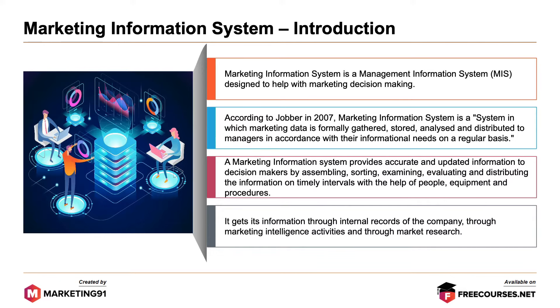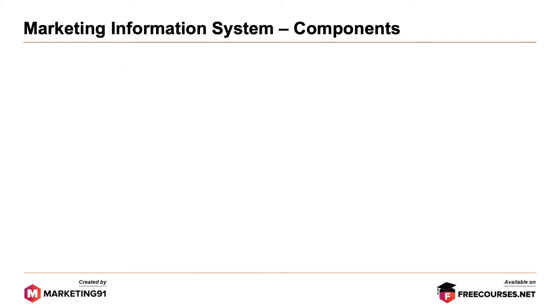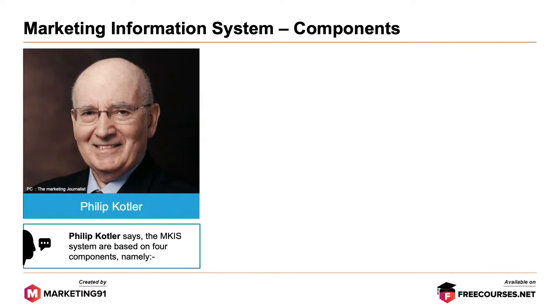It gets its information through internal records of the company, through marketing intelligence activities and through market research. Moving further, according to Philip Kotler, the marketing information system is based on four components.